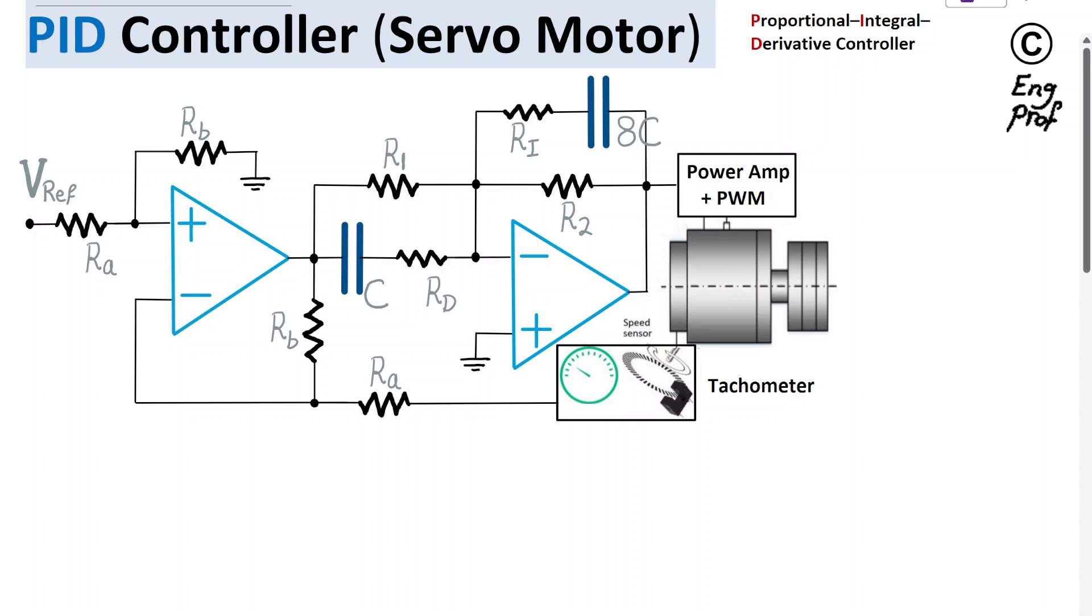A PID controller for servo motor is shown here, a circuit implemented with two op-amps, two capacitors, and a bunch of resistors. A VREF, or set point voltage at the input, is set, setting a desired speed for the servo motor.